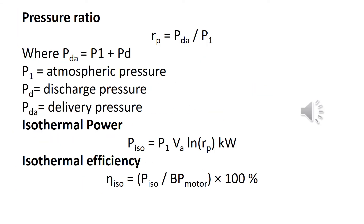Next, you have to find out the isothermal power, which is P1 × VA × ln(Rp), where P1 is the atmospheric pressure, VA is the actual volume of air compressed, and Rp is the pressure ratio — PDA / P1. PDA is the delivery pressure, which is the summation of discharge pressure and atmospheric pressure. Finally, isothermal efficiency is determined as isothermal power divided by the input power of the compressor (that is, the BP of the motor).